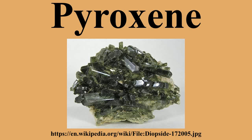The pyroxenes are a group of important rock-forming inosilicate minerals found in many igneous and metamorphic rocks. They share a common structure consisting of single chains of silica tetrahedra and they crystallize in the monoclinic and orthorhombic systems. Pyroxenes have the general formula XY2O6. Although aluminium substitutes extensively for silicon in silicates such as feldspars and amphiboles, the substitution occurs only to a limited extent in most pyroxenes.